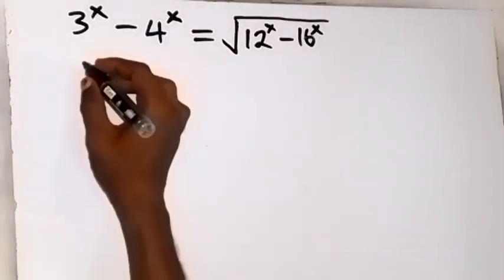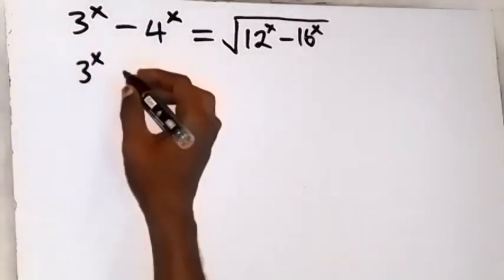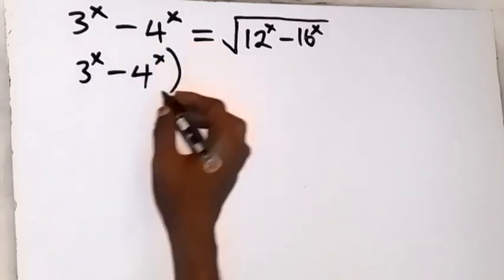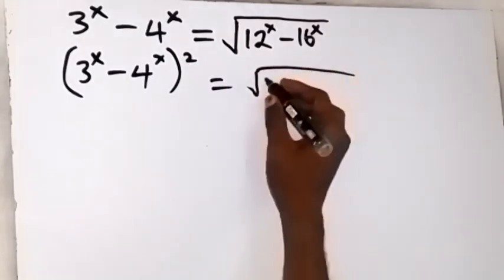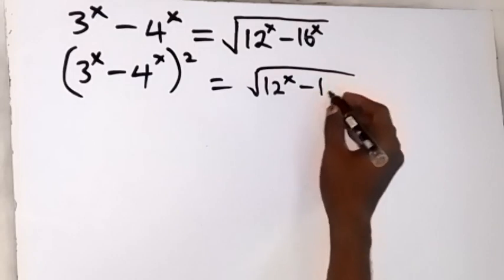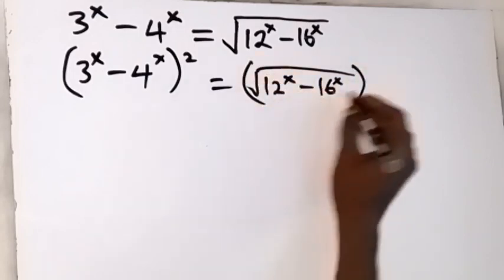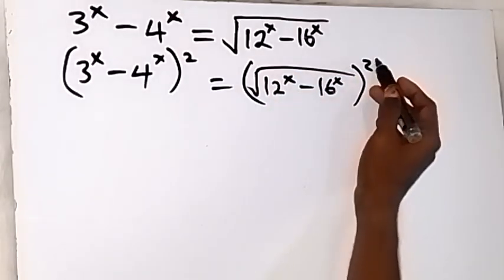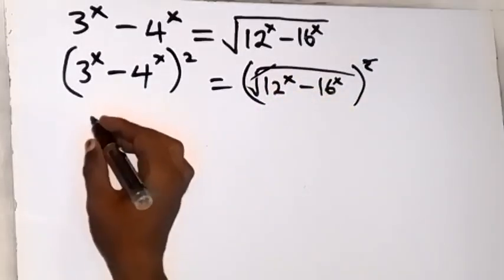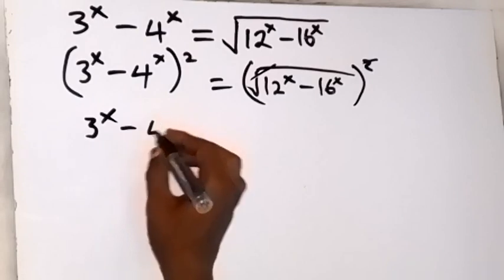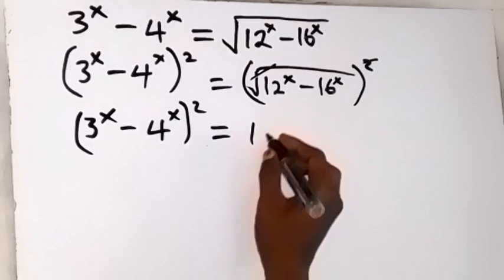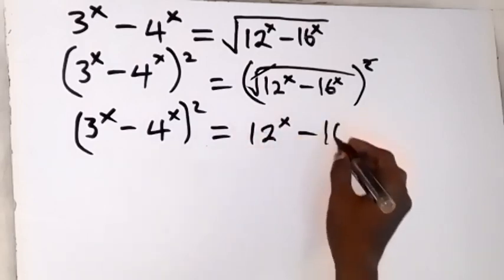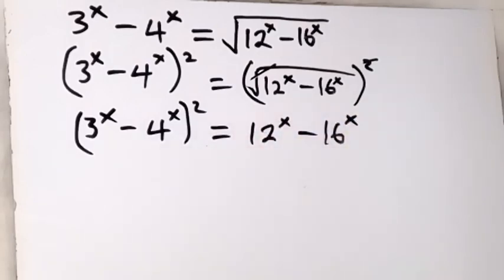We can square both sides. This gives us 3 raised to power x minus 4 raised to power x, all squared. Also square the other side: root of 12 raised to power x minus 16 raised to power x, all squared. The square cancels the square root on the left, leaving 3 raised to power x minus 4 raised to power x, all squared. It equals 12 raised to power x minus 16 raised to power x.